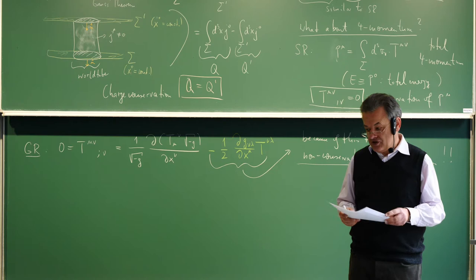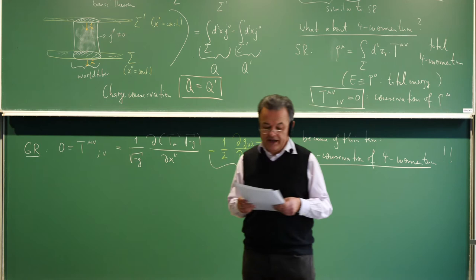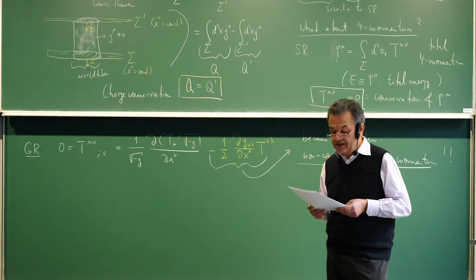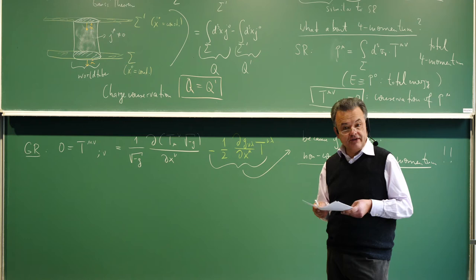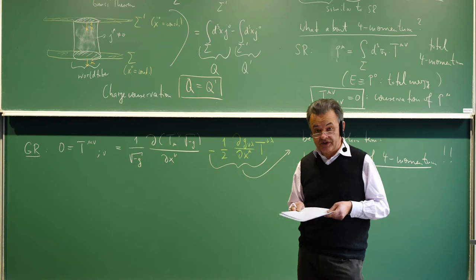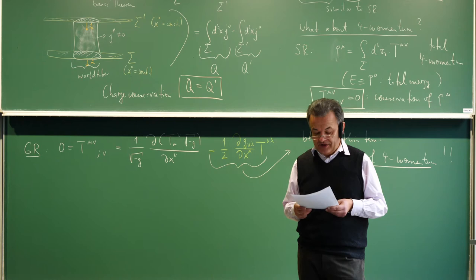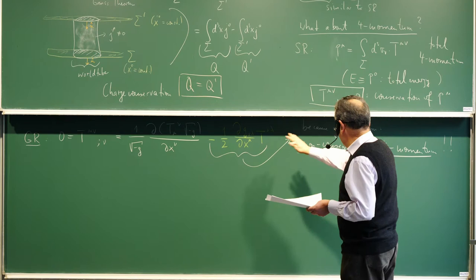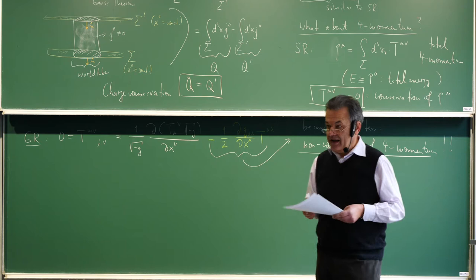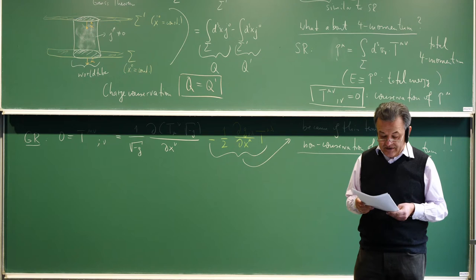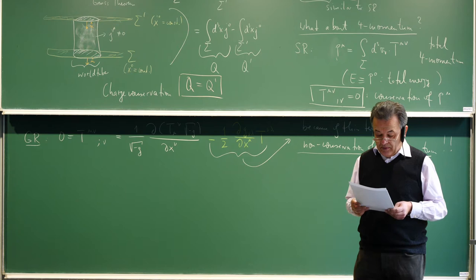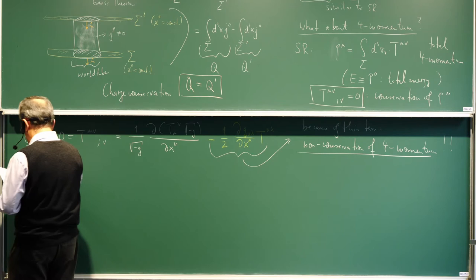People have thought about this already very early. One can introduce what is called a pseudo energy-momentum tensor — Landau and Lifshitz have done that, and you can find details in their famous textbook (second volume), where they introduce a t^mu nu for the gravitational field. But this is not a tensor; it is only a tensor under linear coordinate transformations. So we dispense here with local energy-momentum conservation, and in general relativity we can have expressions for the total energy and total momentum as surface integrals.